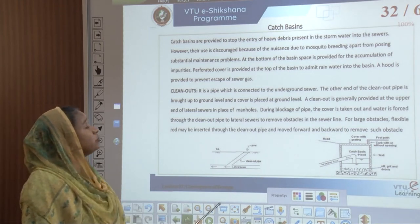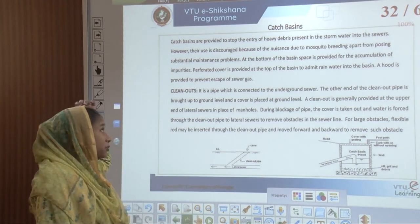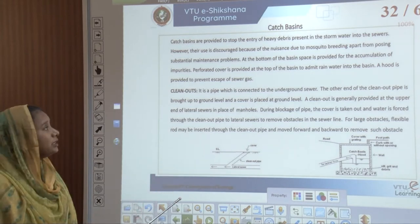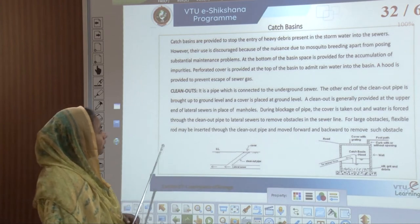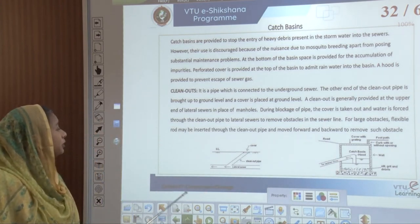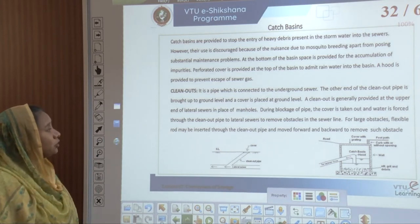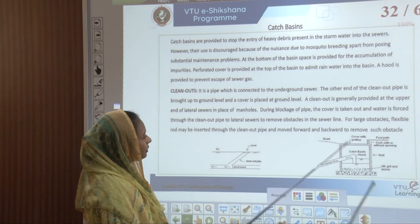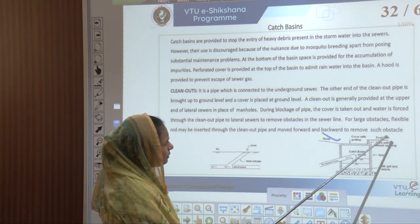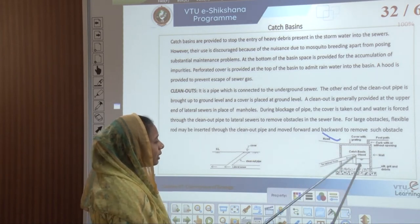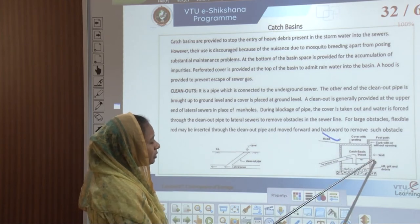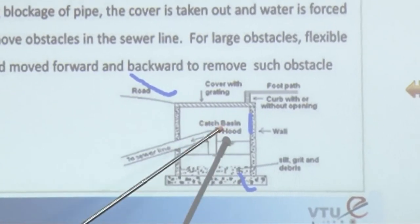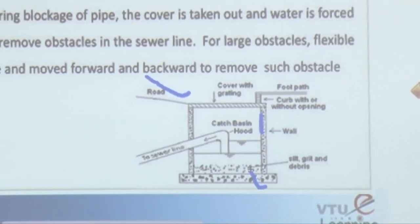Catch basins are provided to stop the entry of heavy debris present in the storm water into the sewers. However, their use is discouraged because of mosquito breeding and substantial maintenance issues. At the bottom of the basin, space is provided for accumulation of impurities, and a perforated cover is provided at the top to admit rainwater into the basin. A hood is provided to prevent escape of sewer gas. All the silt, grit and debris settle down at the base, and the water flows from the hood into the sewer line.